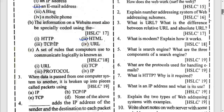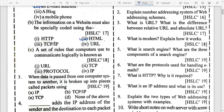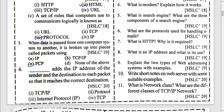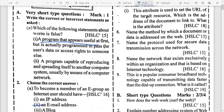A set of rules that allows computers to communicate logically is known as protocols. When data passes from one computer to another it is broken into pieces called packets using TCP. Fill in the blank: IP adds the IP address of the sender and the destination to the packet so that it reaches the correct destination.